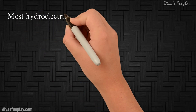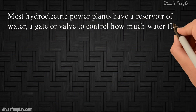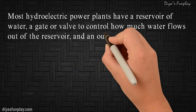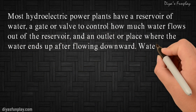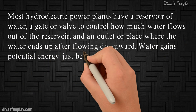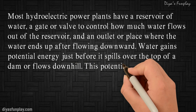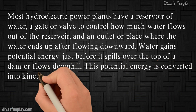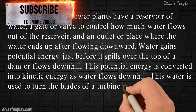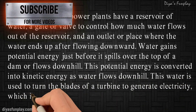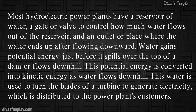Most hydroelectric power plants have a reservoir of water, a gate or valve to control how much water flows out of the reservoir, and an outlet where the water ends up after flowing downward. Water gains potential energy just before it spills over the top of a dam or flows downhill. This potential energy is converted into kinetic energy as water flows downhill. This water is used to turn the blades of a turbine to generate electricity, which is later distributed to the power plant's customers.